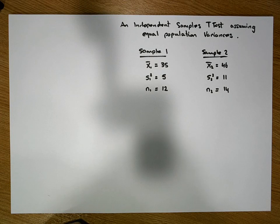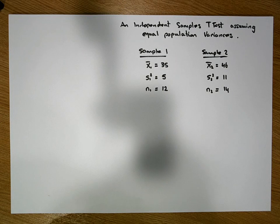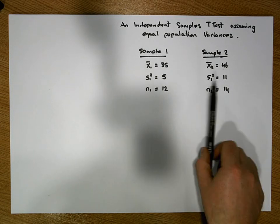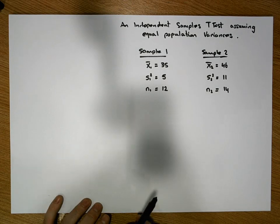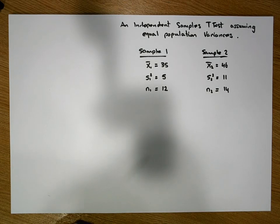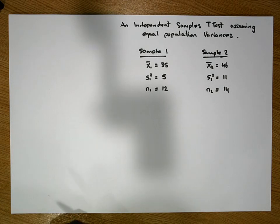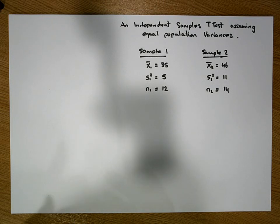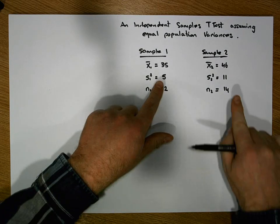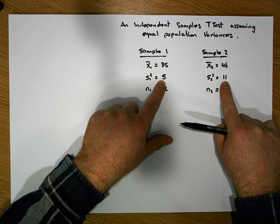Any time we have to undertake an independent samples t-test, there are two variants. There's one where we assume both samples have been drawn from populations that have the same population variances. And there's another variant where we assume the two samples have been drawn from populations that have different population variances. To decide which version to undertake, it's important to precede the test with an f-test. The f-test allows you to test whether your two variances have been drawn from populations with the same or unequal population variances.